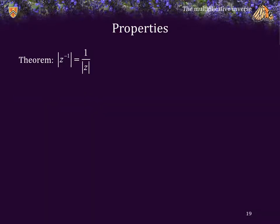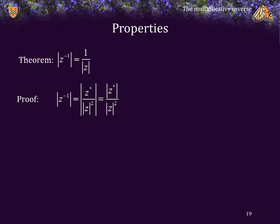Theorem: The magnitude of the reciprocal of z is the reciprocal of the magnitude of z. Proof: The inverse can be given by z star over the magnitude squared. The magnitude of a product is equal to the product of the magnitudes — in this case a division — so it's the magnitude of z star over the magnitude of z squared. But the magnitude of z star is equal to the magnitude of z, so we can cancel out one of the magnitudes and therefore the magnitude of the inverse is 1 over the magnitude of z.